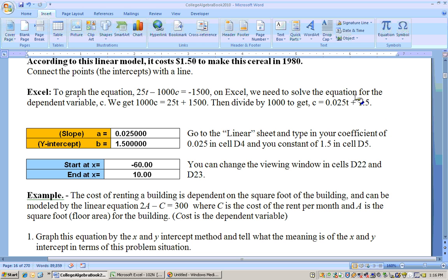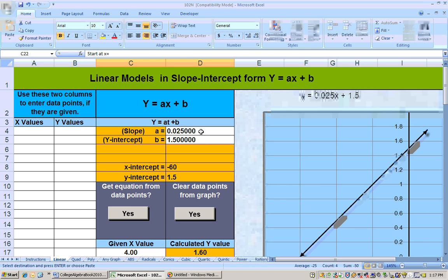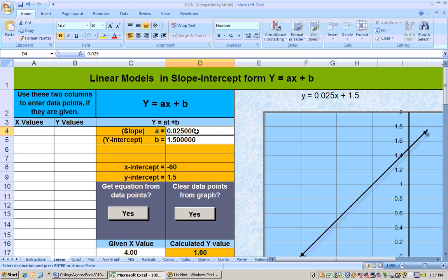So at this point, I got it in the slope intercept form right now. So I can put this in as my coefficient for a on the linear Excel sheet and 1.5 in for my b. So here they are, the 0.025 is my a, and the 1.5 is my b, and as soon as I put that in there, I get a graph.